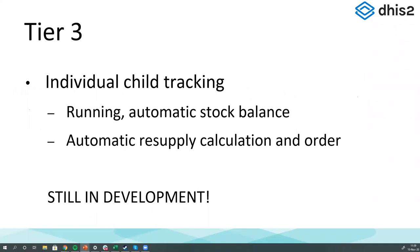Tier three is where we actually track each individual patient, record the drugs being given to them, and have that automatically update the stock tally. This is what GAVI is encouraging us to develop. We're still working on this — it requires new functionality we're still developing. If you asked me today, can DHIS2 do this? No. But if you asked me next year, the answer might be yes. It's something we're currently working on.